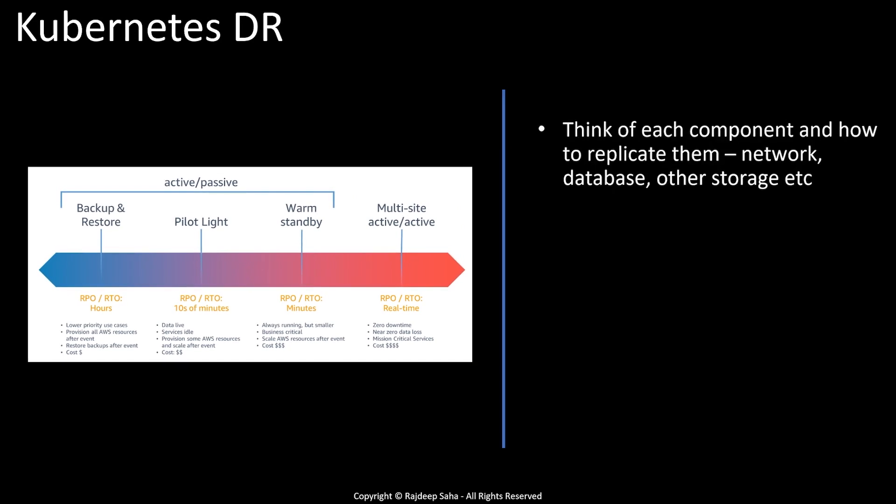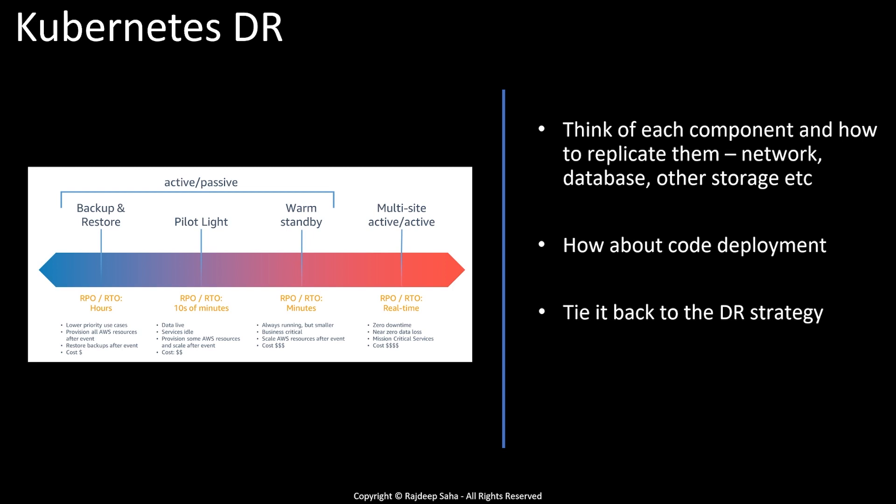In summary, for Kubernetes disaster recovery, think of each component and how to replicate it: networking, database, and other storage. For stateful workloads, use a tool like Velero to replicate persistent volumes. If you are using S3 buckets, replicate them in another region. For code deployment, we talked about Jenkins — you can also do this using GitHub Actions. Think about how to achieve code deployment automatically in different regions, tie it back to the disaster recovery strategy discussed, and consider what you need to change if you need to fail back, or switch to pilot light or multi-site active-active.